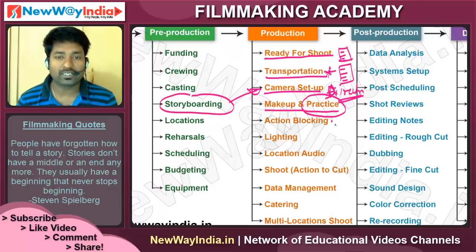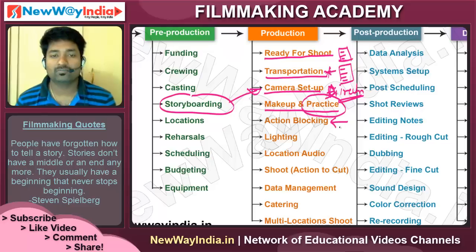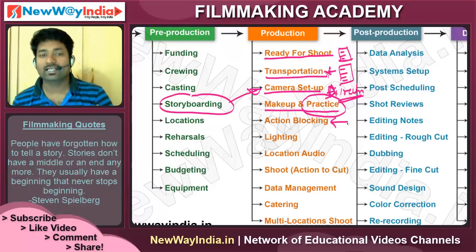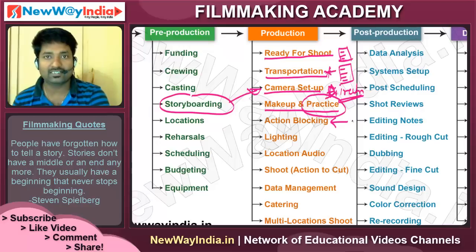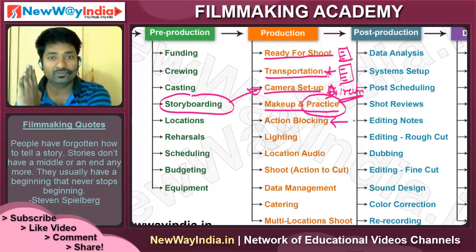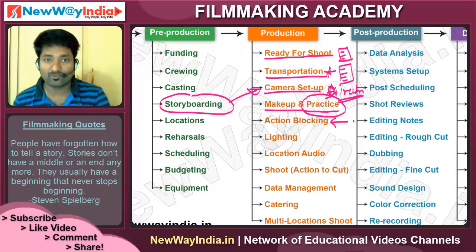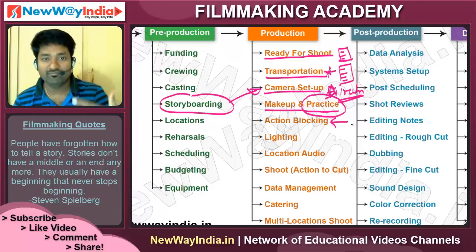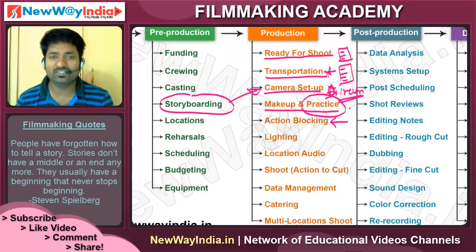Then action blocking. Once the camera setup is over, you need to guide the actors: from here you have to start, say the dialogue, and here you have to end — something like that. That is called action blocking — who comes when into the scene, into the field. These things will be covered in detail later.